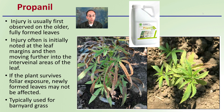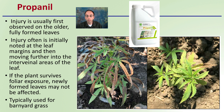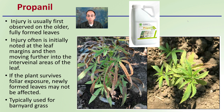Then propanil — injury is usually first observed in the older, fully formed leaves, which is an important distinction. Injury is often initially noted at the leaf margins, which are the edges of the leaves, and then moves further into the interveinal areas. It starts at the margins and works its way in. If the plant survives this lower exposure, newly formed leaves may not be affected — so this is one the plant can potentially grow out of. This herbicide is typically used for barnyard grasses, so if those are common in your area, it may be sprayed at higher frequency.